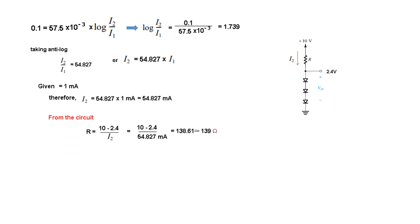By V over I. So the resistance is V over I. V is 10 minus 2.4, and I is I2, 54.827. Solving we get the value of resistor 138.61 ohm, which can be approximated as 139 ohm. So this is the answer given in the book.